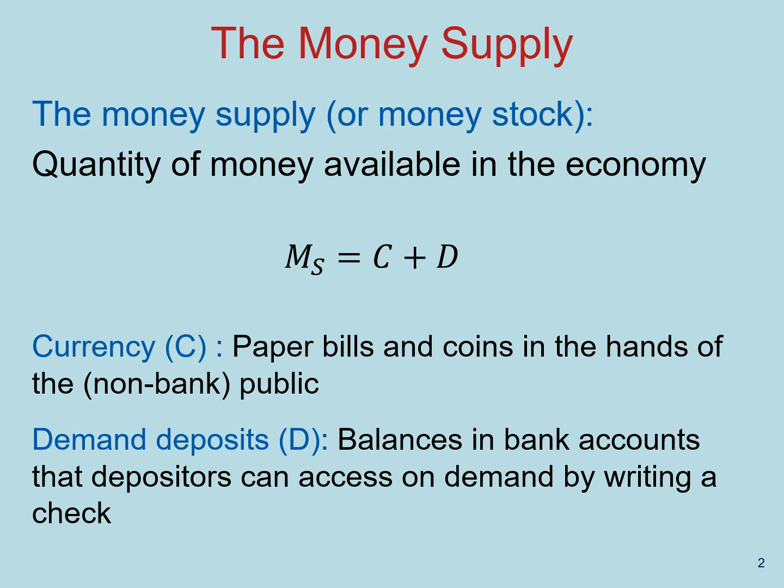As we talked in the previous video, money is an asset that we use for exchanging goods and services. The money supply, or money stock, is the quantity of money available in the economy, represented mathematically as the amount of currency available in the public plus deposits. Currency refers to paper bills and coins in the hands of the public, while demand deposits are balances in bank accounts that depositors can access on demand by writing a check.